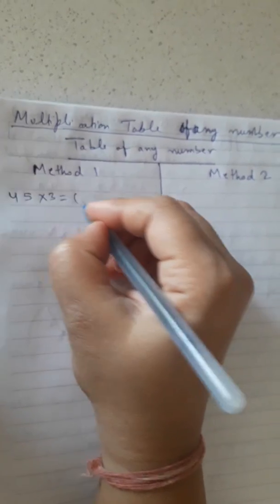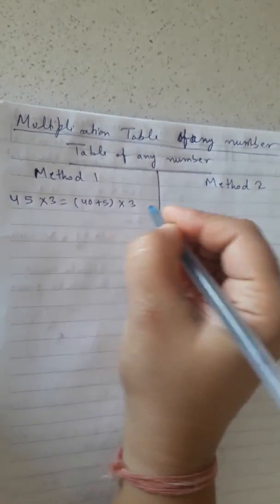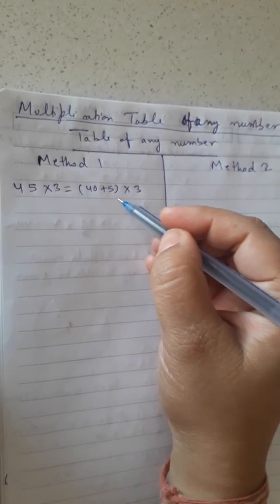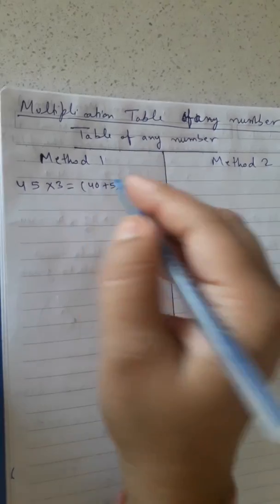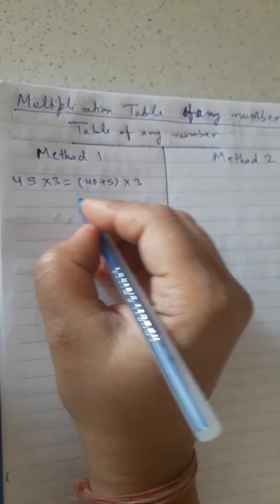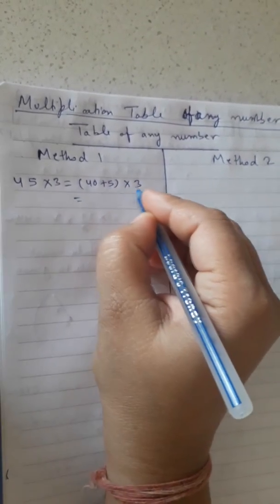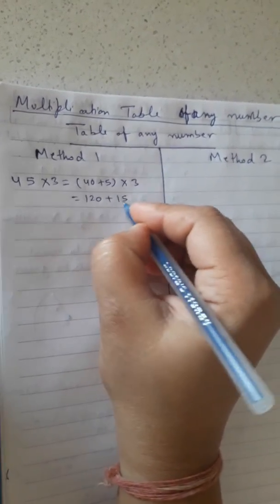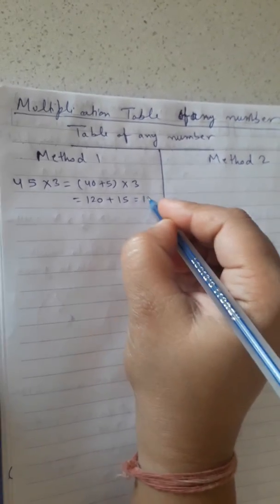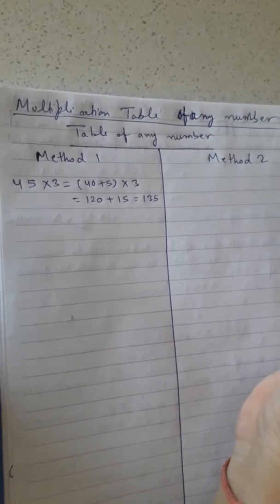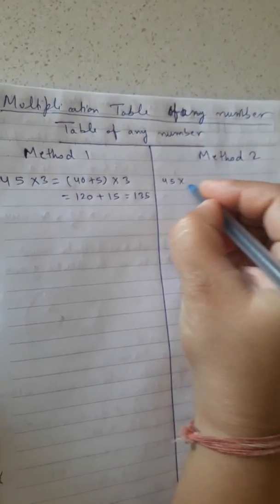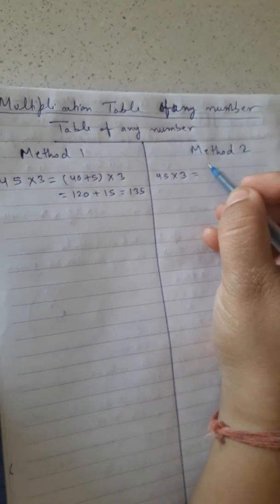Method 1: 45 means 40 + 5. For explaining I am writing it out, but if you do it repeatedly you can do it in your mind. So (40 + 5) × 3 — first we do 40 × 3 = 120, and 5 × 3 = 15. Then 120 + 15 = 135. This is Method 1 for finding the table of any number.